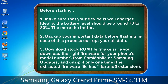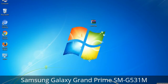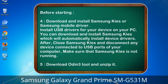3. Download the stock ROM file. Make sure you download the right firmware for your phone's model number from Sammobile or Samsung Updates, and unzip it only one time. The extracted firmware file has a *.tar.md5 extension. 4. Download and install Samsung Kies or Samsung mobile driver, and install USB drivers for your device on your PC. You can download and install Samsung Kies which will automatically install device drivers.